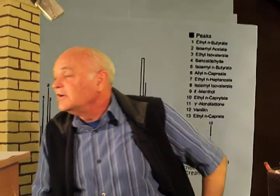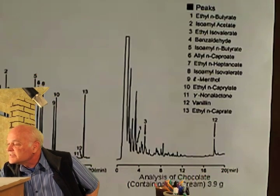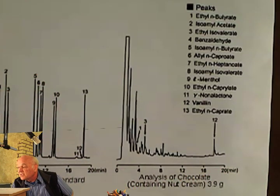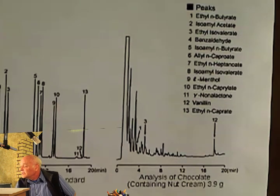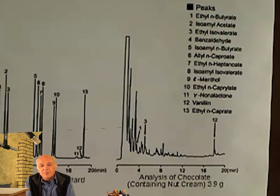Looking at this chromatogram, we can see for example that it contains ethyl butyrate, isoamyl acetate, ethyl isovalerate, and benzaldehyde — which is an aromatic compound. This is a flavoring standard for chocolate, and you could also use it for fermentation applications like beer or wine.